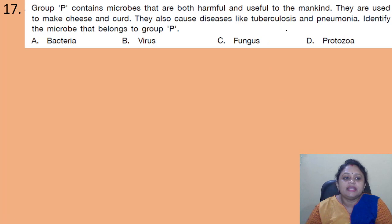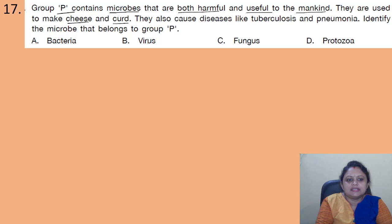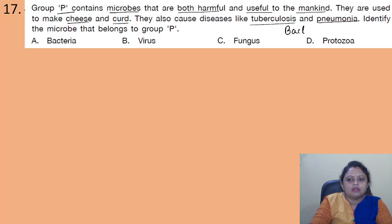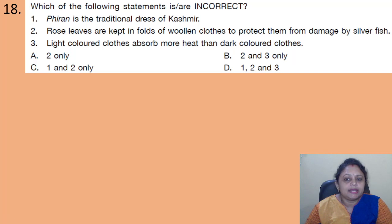Coming to the next question: group P contains microbes that are both harmful and useful to mankind. They are used to make cheese and curd, and also cause diseases like tuberculosis and pneumonia. Identify the microbe in group P. Options: A - bacteria; B - virus; C - fungus; D - protozoa. Tuberculosis and pneumonia are bacterial diseases, and bacteria are also used to make cheese and curd. The correct answer is option A — bacteria.